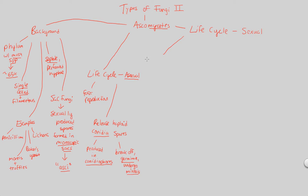The first step is that the conidia — if we remember, these are haploid — they're going to fuse with specialized hypha, which would be haploid as well. So we have this haploid-haploid fusion, but it has to be of the opposite mating type. Sexual variation requires variation, so opposite mating type.